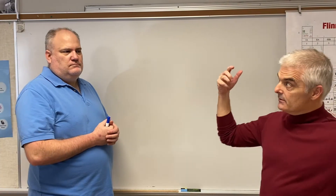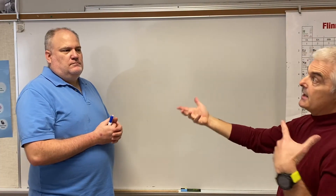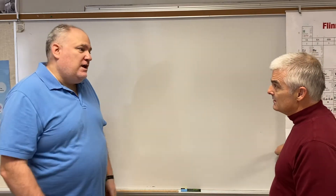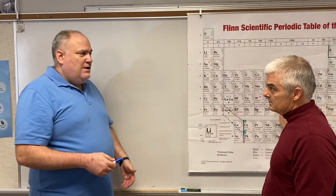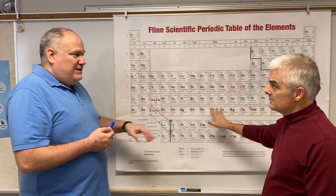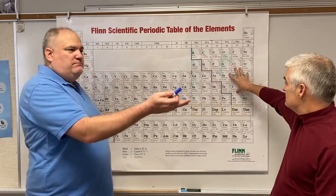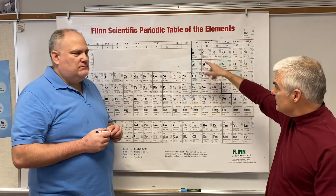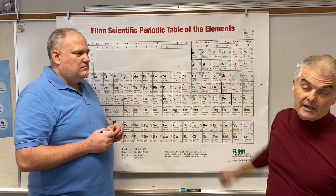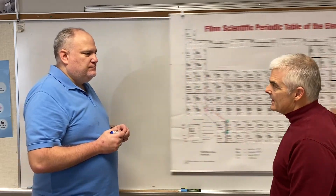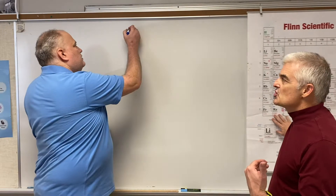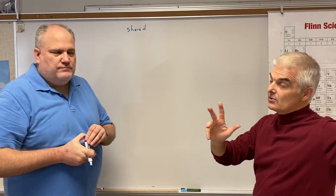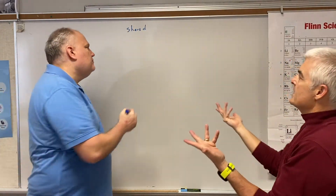In the last video we talked about ionic and metallic bonding. Today we're going to talk about covalent bonds. Covalent bonds are always between non-metals and non-metals — the upper right of the periodic table, but also including hydrogen. The key thing is that electrons are being shared, so we're going to draw some structures. It's all about electrons.